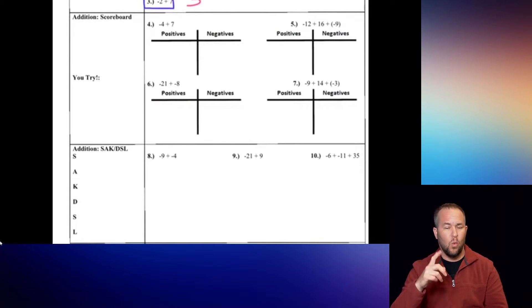SAC stands for Same sign, Add, Keep the sign. So if both numbers are negative or both are positive, you add them together and keep the sign. DSL stands for Different sign, Subtract, keep the sign of the Larger number. If one number is positive and one is negative, you subtract and keep the sign of the larger number. Write these down as we go through the examples.